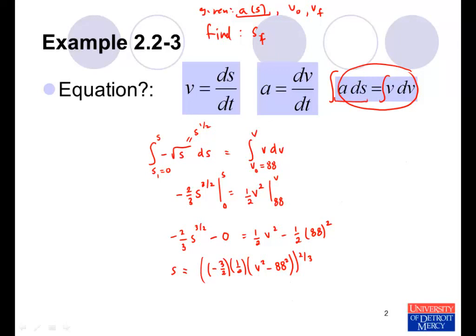And so there's an expression for the position as a function of velocity. That could be useful for checking things. In this case, we ultimately want to find the final position, the position when the velocity has reached 0. So since V final is 0, we have negative 3 over 4 multiplying negative 88 squared. So that will become positive. We take everything to the two-thirds power. We plug that into our calculator, and the final position works out to be approximately 323 feet.